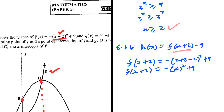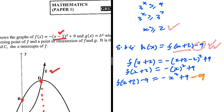Now let's take care of the minus 9 part. We have f of x plus 2 minus 9, which equals minus x squared plus 9 minus 9. The 9 and minus 9 cancel, so f of x plus 2 minus 9 equals minus x squared. That is the equation of h.